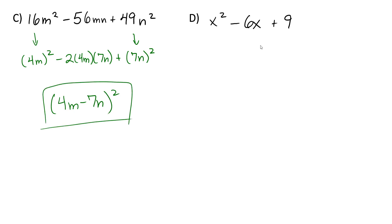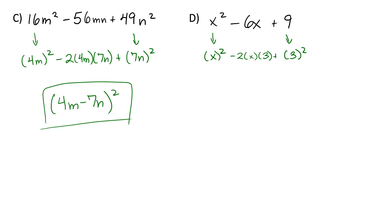For example d, I would suggest pausing the video and trying to work through it on your own. We can factor this by recognizing it as a perfect square trinomial — though the AC method is also fine on an exam. We rewrite x squared as x in parentheses squared and 9 as 3 squared, then check that negative 6x equals negative 2 times x times 3, which it does. So this is a perfect square trinomial and factors into x minus 3 squared.